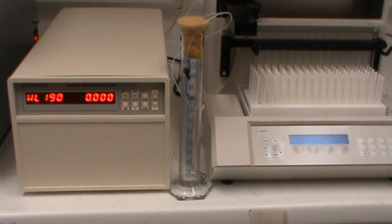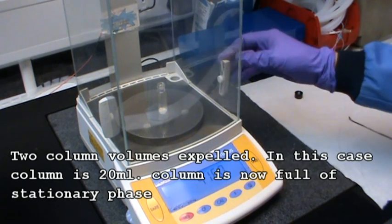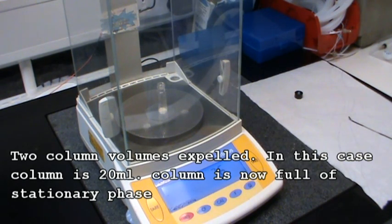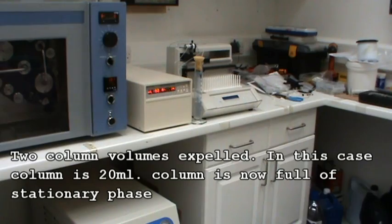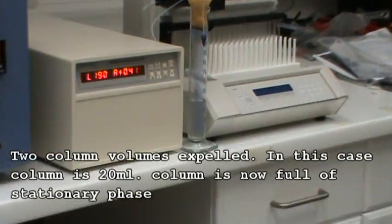Whilst the column is filling, start to measure out your sample. Once 40 ml or so of solvent has been expelled from the column, the column is now full of stationary phase.